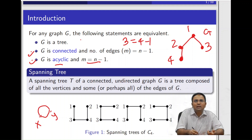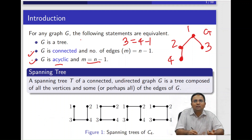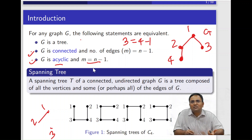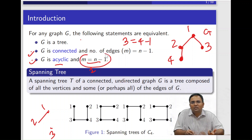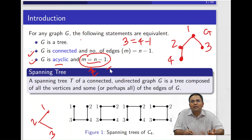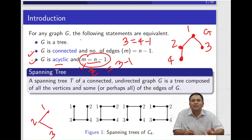However, the number of edges must also equal n minus one, because not every acyclic structure is a tree. For example, I can draw a structure which is acyclic but not a tree — the number of edges is one, and one is not equal to four minus one. The second condition is important because if I want to make the structure connected, I must add at least one edge. Once connected, the number of edges equals n minus one, and then the structure becomes a tree.